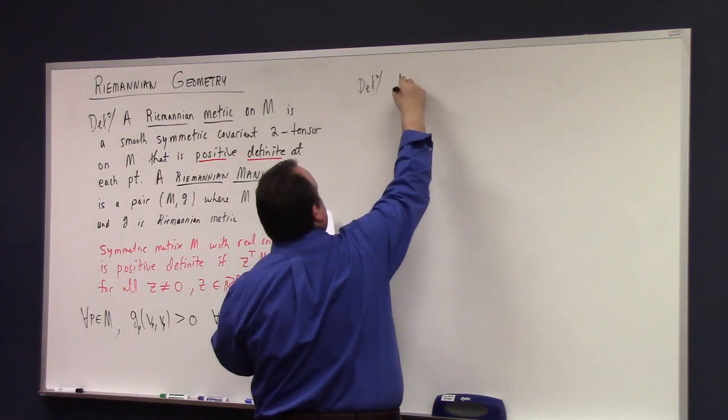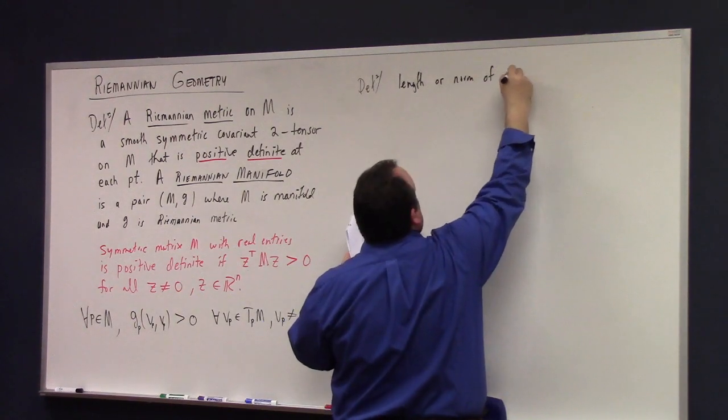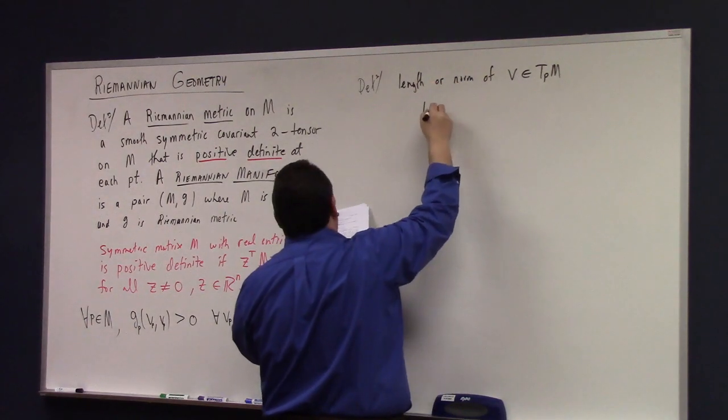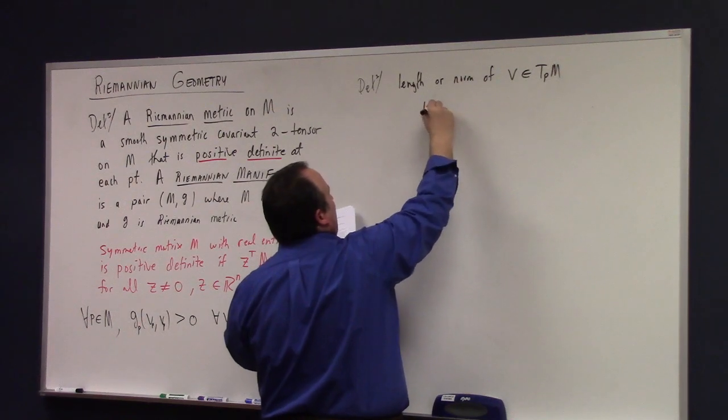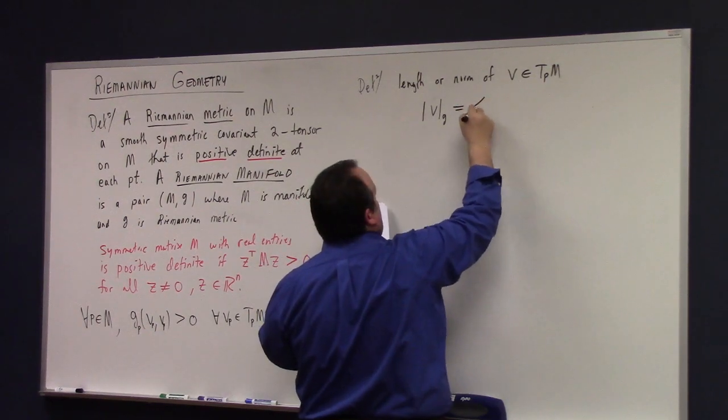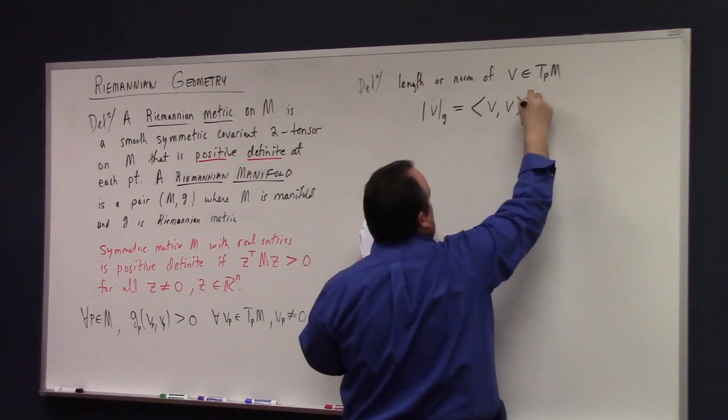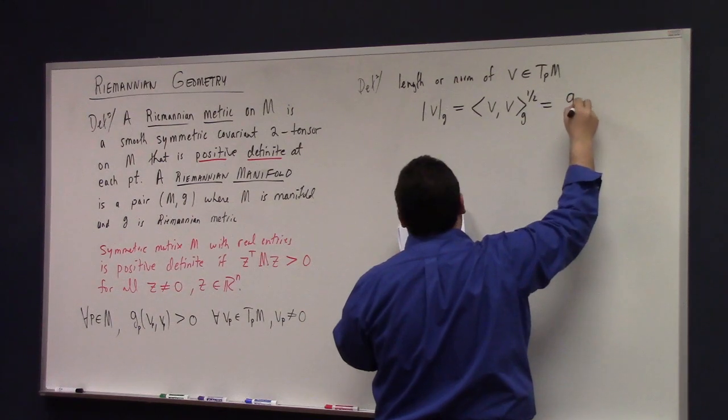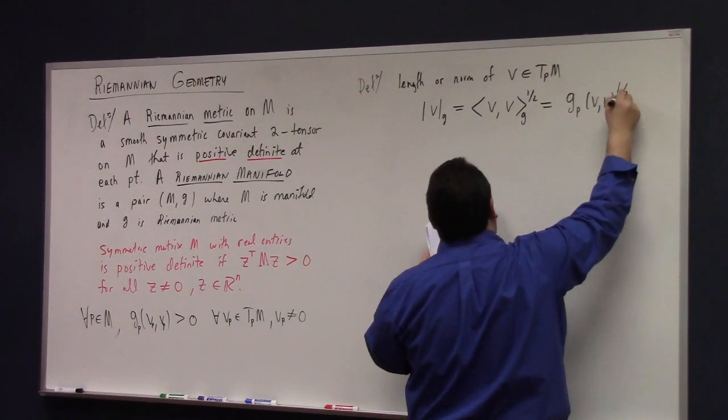This isn't so different than that, though. It really is the curved analog of that ham-fisted smashing the Euclidean norm onto the vector space. It's the same idea, really. So, definition. The length or norm of V in the tangent space to P at M, if we're in a Riemannian metric, he uses the following notation. He puts the sub G on this, because it is the norm with respect to G, and his notation is also this. We take angle bracket V sub G to the one-half power.